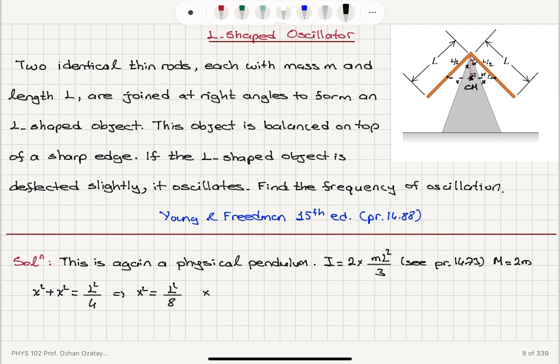So X is L divided by 2 square root 2. And for the physical pendulum, we have found that omega is equal to square root Mgd over I.